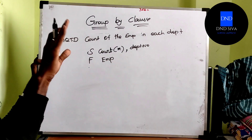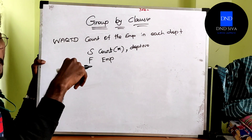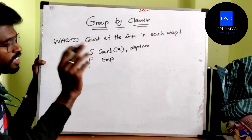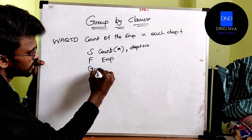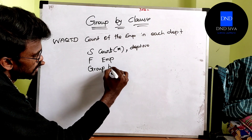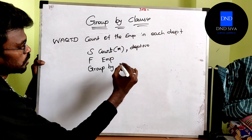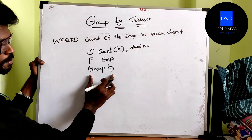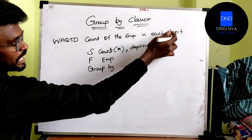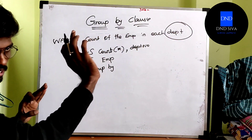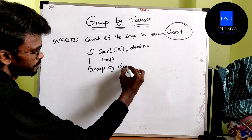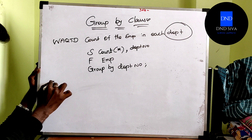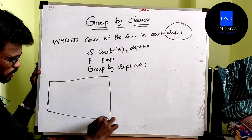Let's use the class type. If we use the class type, for example, we will move group by class. This class type is the class type. When we choose each department, we are asking the number of department. This is the number of department.